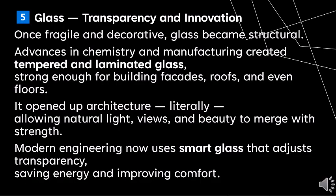Next is glass — transparency and innovation. Once fragile and decorative, glass became structural. Advances in chemistry and manufacturing created tempered and laminated glass strong enough for building facades, roofs, and even floors. It opened up architecture, aligning natural light with views and beauty. Modern engineering now uses smart glass that adjusts transparency, saving energy and improving comfort.